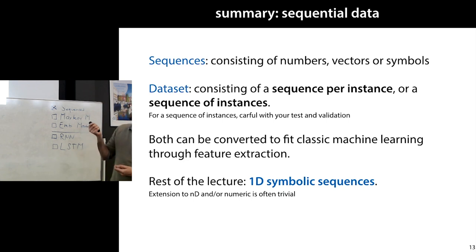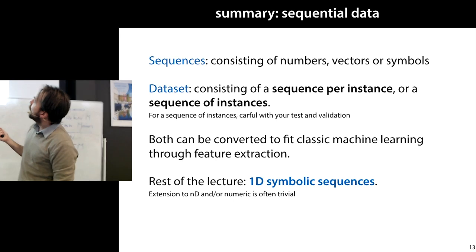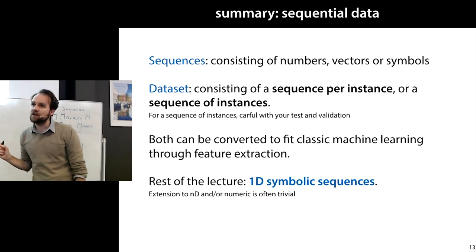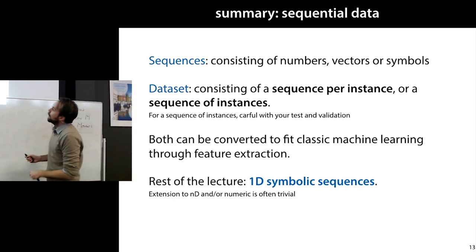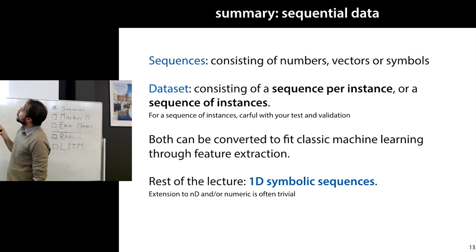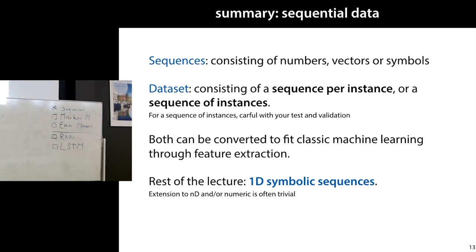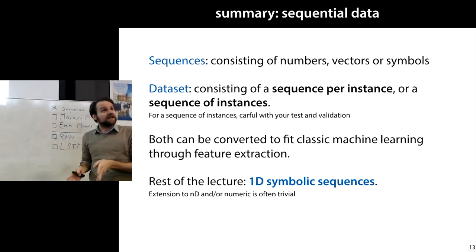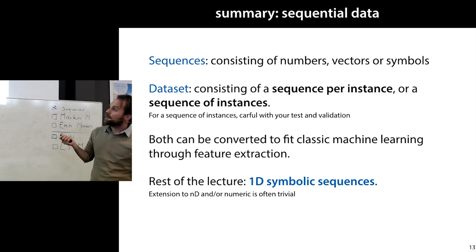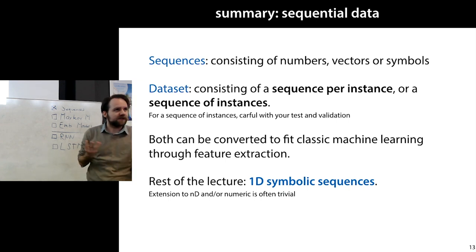Sequences may consist of numbers, vectors, or symbols. Remember to distinguish between a sequence of instances and a sequence per instance. Both can be translated to traditional machine learning settings by feature extraction. In the rest of the lecture, we'll focus not on traditional ML models, but on models specifically designed to consume sequences — mostly one-dimensional symbolic sequences of the language type, though extension to numeric sequences is usually straightforward.